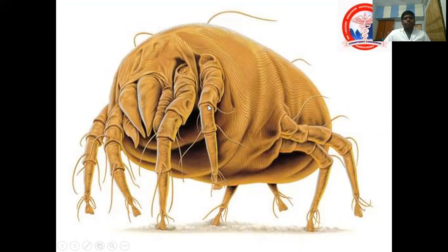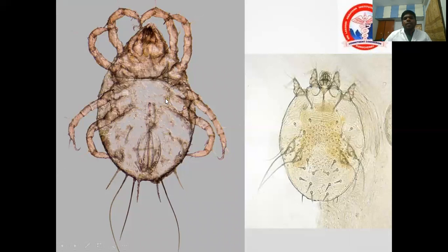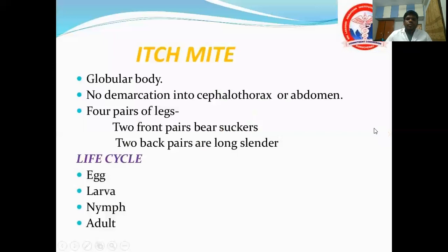Now, what is this? These are mites — also Arachnida with four pairs of legs. The distinguishing feature from ticks is the arrangement: two pairs of legs anteriorly and two pairs posteriorly. Mite identification: globular body, no demarcation into cephalothorax or abdomen, four pairs of legs — two front and two at the posterior side. Life cycle: egg, larva, nymph, and adult.